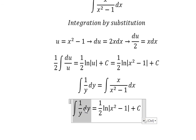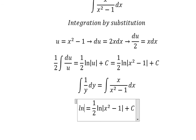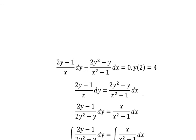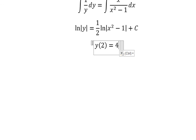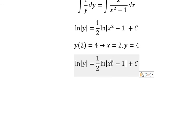The integration of this one we have ln of the absolute value of y. Now we have the conditions. That means when x equal to number 2, y equal to number 4. So we put number 2 in here, number 4 in here to find the value of c.